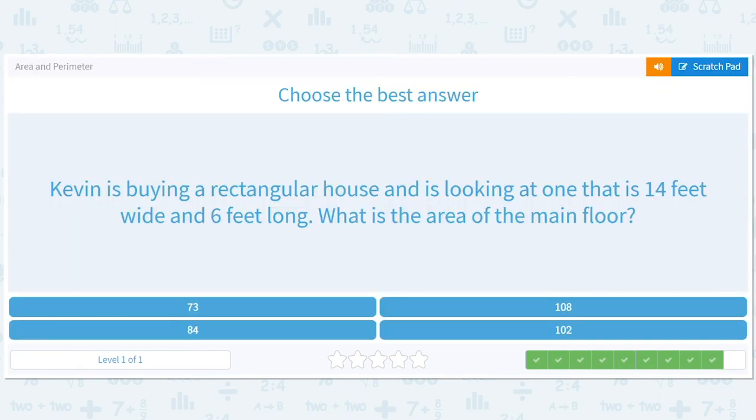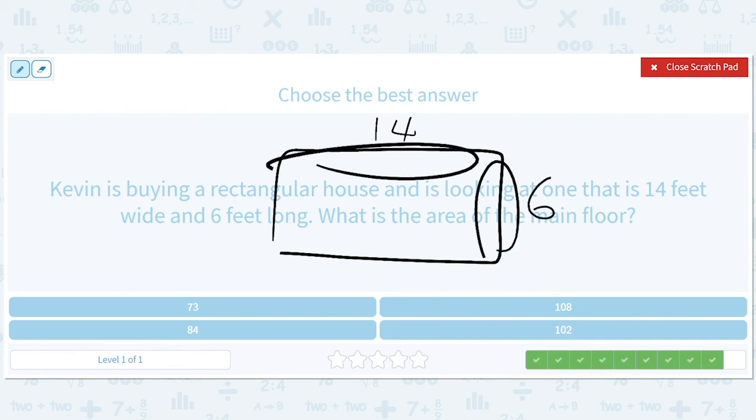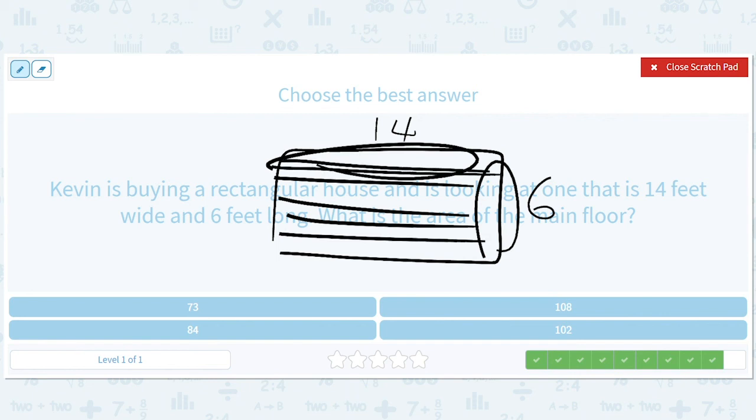Kevin is buying a rectangular house and is looking at one that is 14 feet wide and 6 feet long. What is the area of the main floor? Okay. Very good. So 14, 6. The area is length times width because you take this 14 and you lay it out over and over again. It's like, imagine you had a floorboard and each one was 14 feet long and you laid them out. Then you'd have 14 times 6. So it'd be 6 times 14, 24, put a 2 here. So that'd be 84.